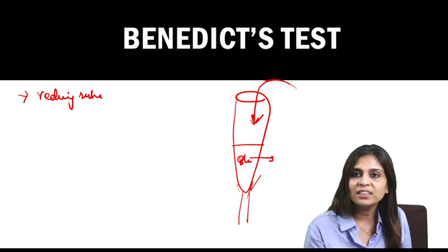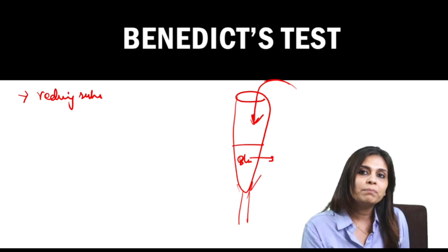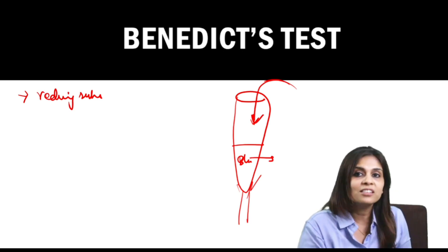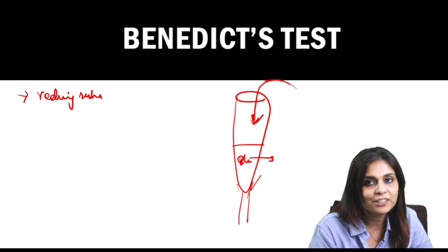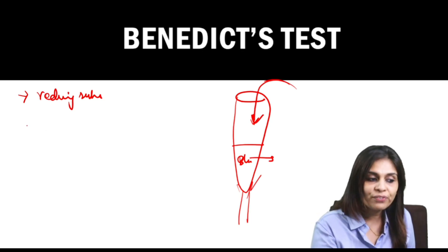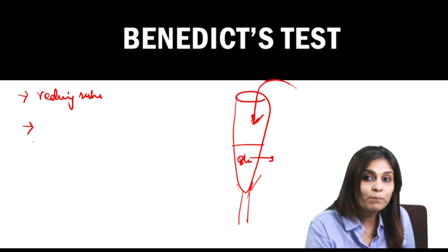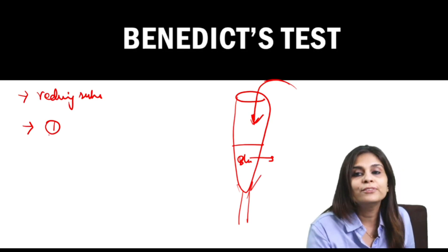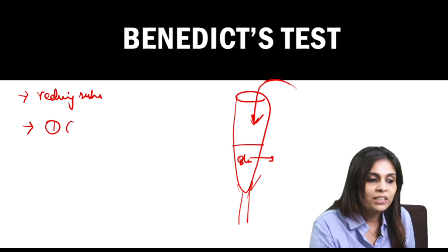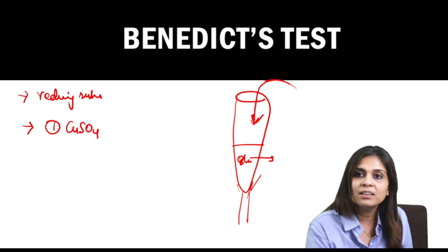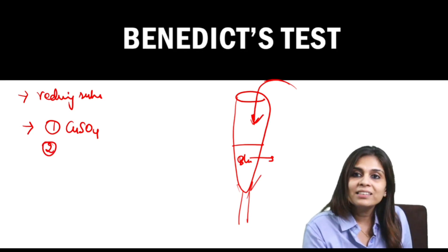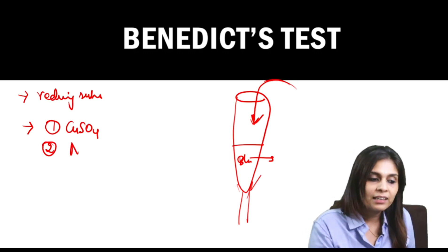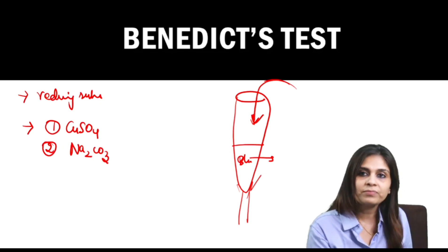A positive Benedict's test means a color change from blue to a series of colors. It is also a semi-quantitative test, because depending upon the color you can determine the concentration of the reducing substance present. The composition of Benedict's reagent: copper sulfate provides the blue color always seen in the reagent; sodium carbonate provides the alkaline medium favorable for reducing property; and sodium citrate stabilizes the solution.